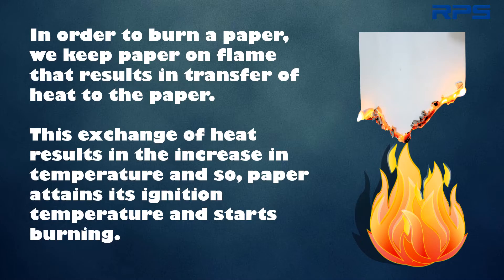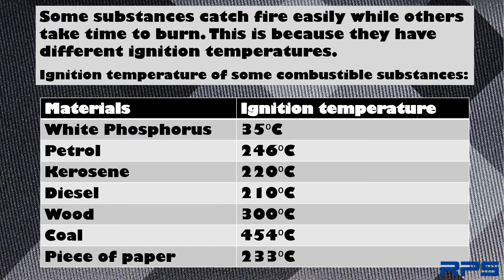In order to burn a paper, we keep it on a flame, which results in the transfer of heat to the paper. This exchange of heat increases the temperature until the paper attains its ignition temperature and starts burning. Certain substances catch fire easily while others take time to burn, because they have different ignition temperatures.